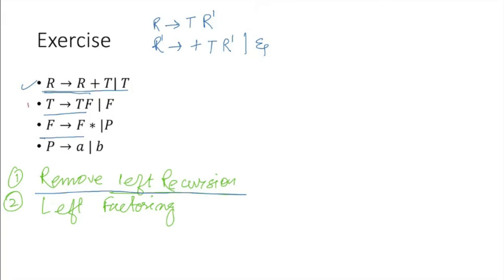Next, you take this production rule. It can be rewritten as T to F T dash, right? Then T dash goes to, what is alpha here? F is alpha here, right? F T dash, or epsilon.